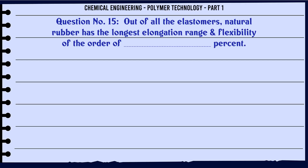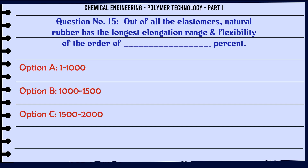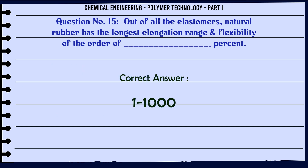Out of all the elastomers, natural rubber has the longest elongation range and flexibility of the order of: A. 1–1000%, B. 1000–1500%, C. 1000–1500%, D. 2000–2500%. The correct answer is 1–1000%.